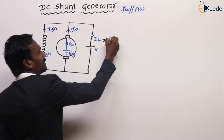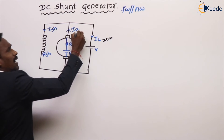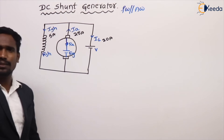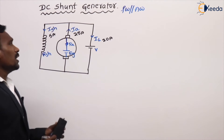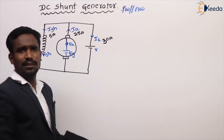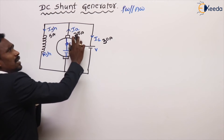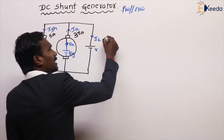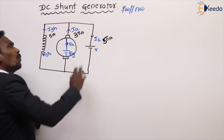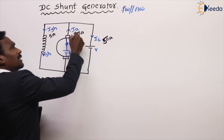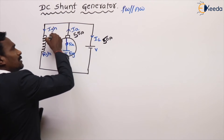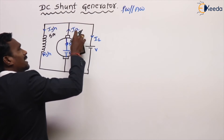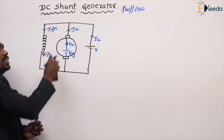For example, if the load current is 20 amperes and the armature current is 25 amperes, then 5 amperes goes to the field and 20 amperes to the load. If load increases to 30 amperes, armature current becomes 35 amperes. If load current required is 50 amperes, armature current is 55 amperes. So when load increases, armature current increases and load current increases, but there is no change in the shunt field current.